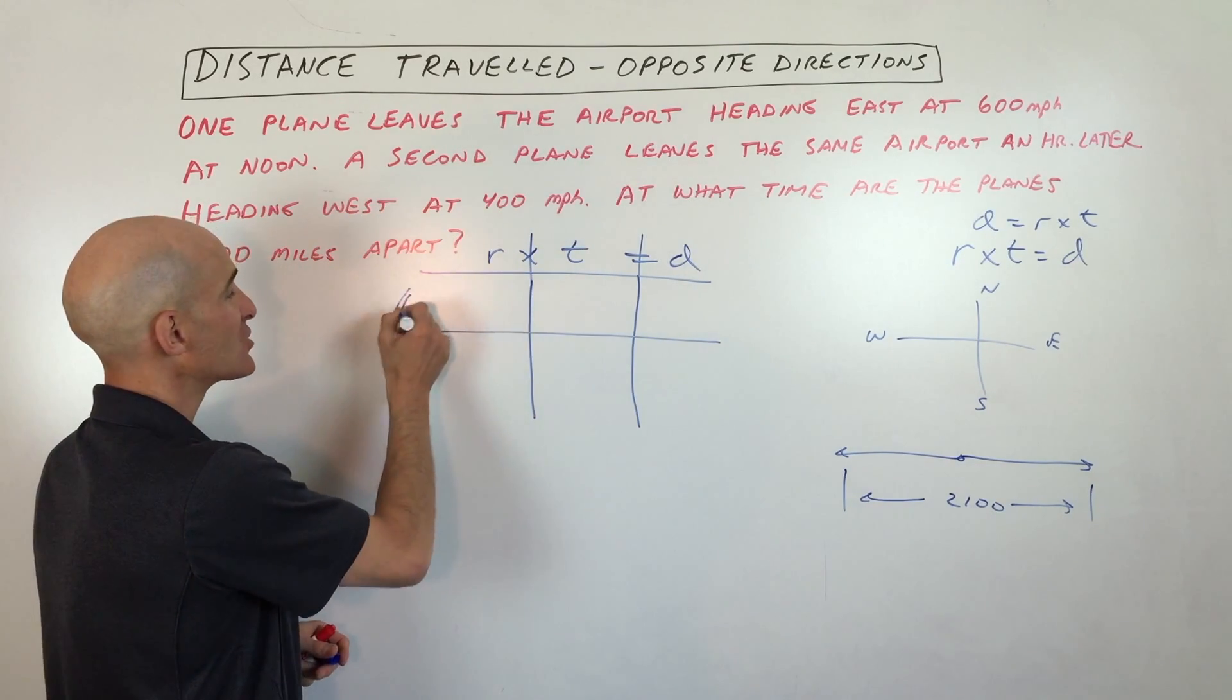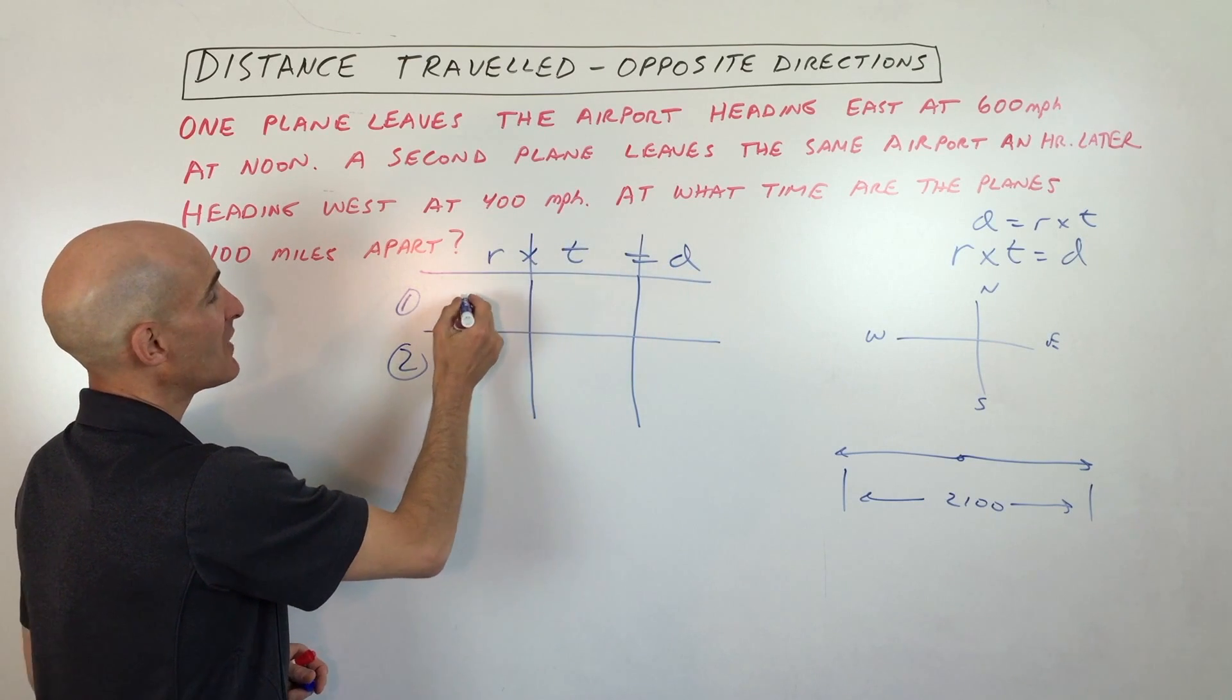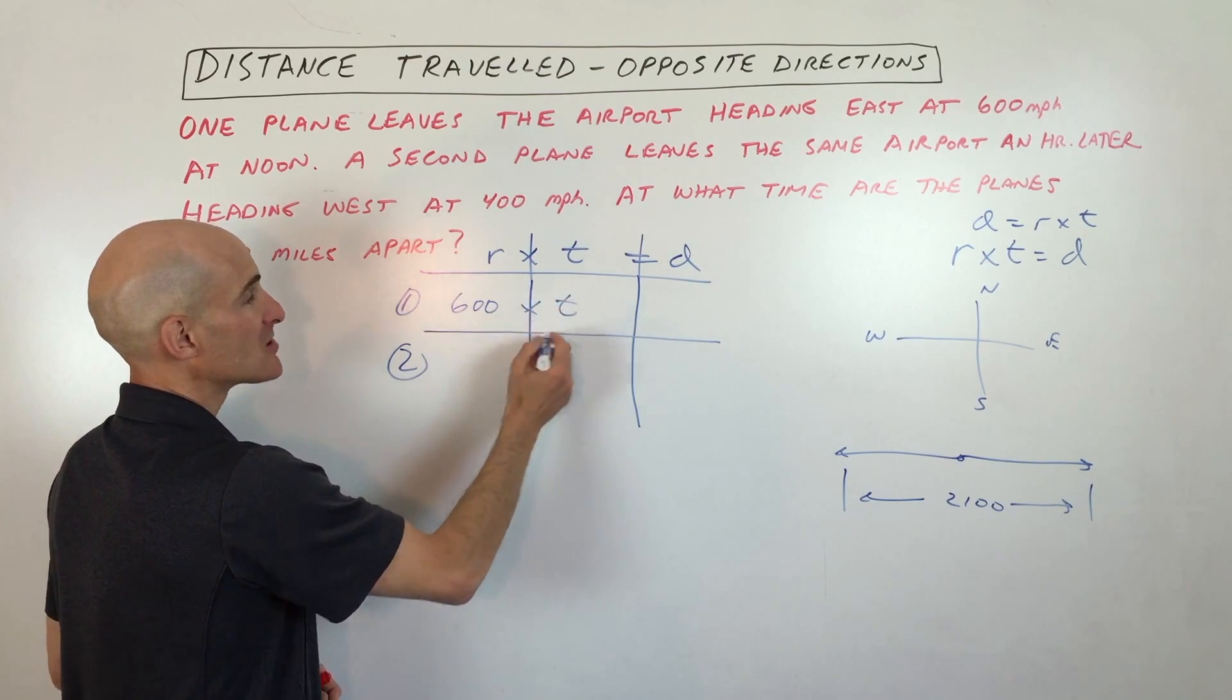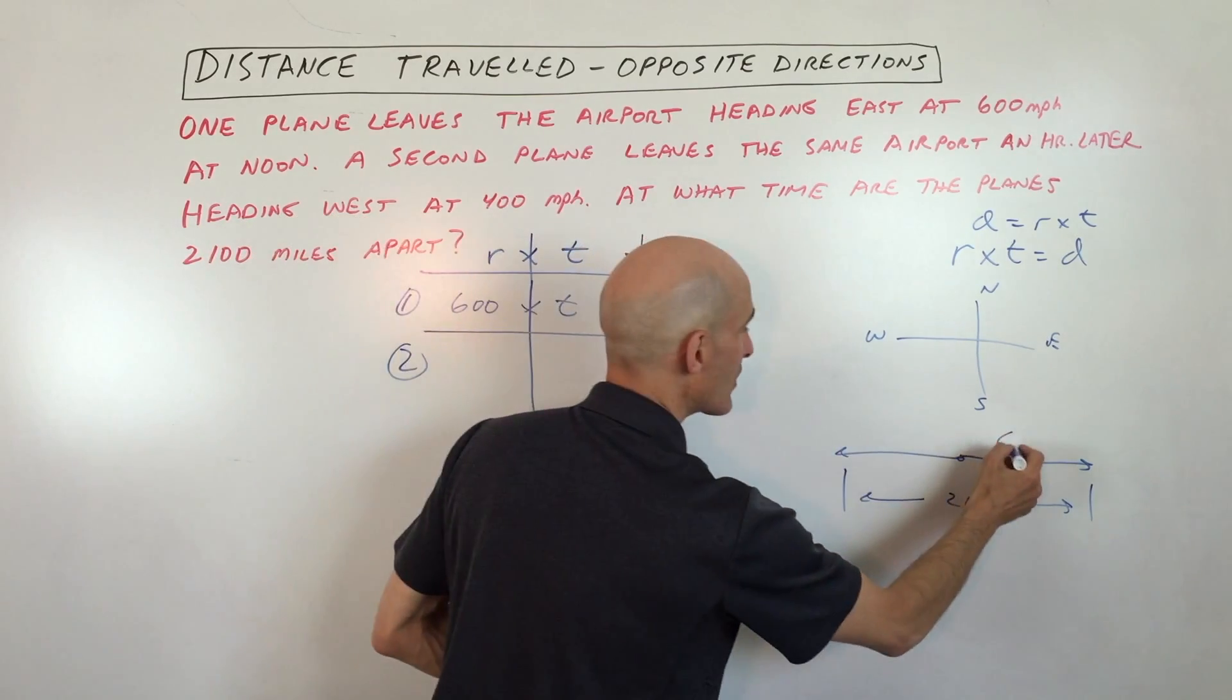But I like to organize my information in a chart like this, rate times time equals distance. So the first plane is traveling at 600 miles per hour for t hours, so you can see it travels a distance of 600t, so we're just going to write that here, 600t.